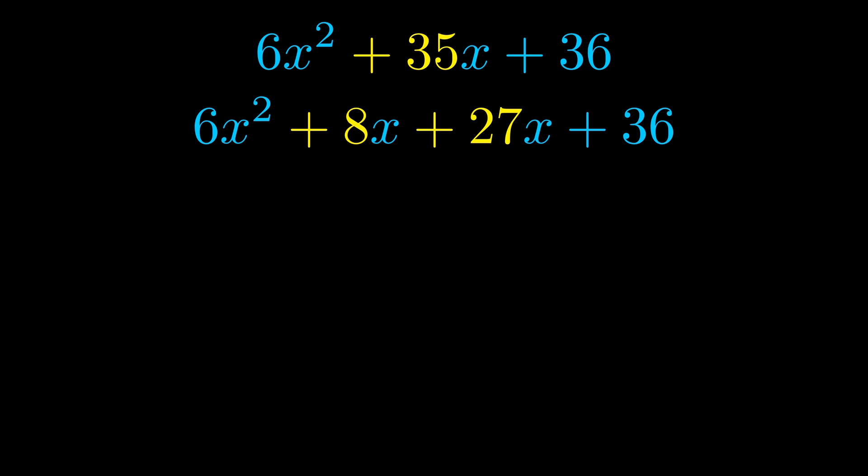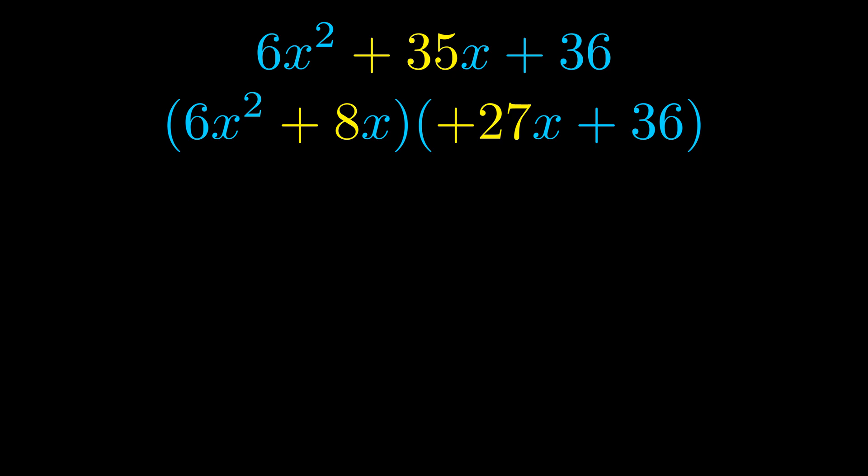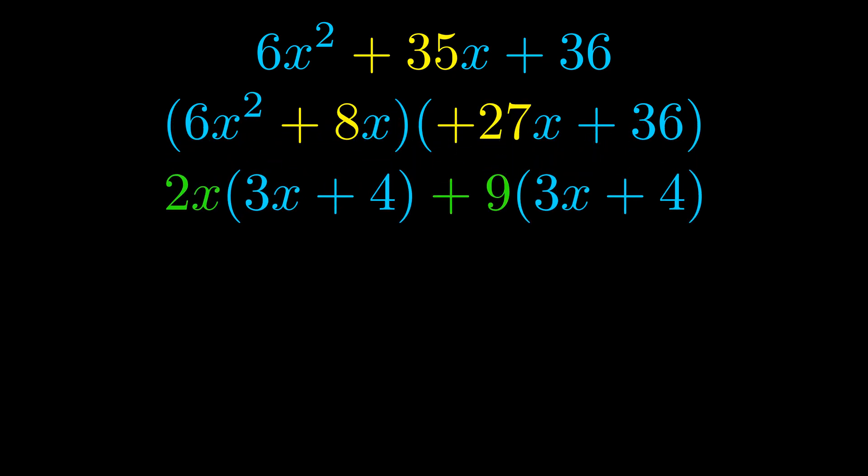Once we've done this, we go ahead and put parentheses around the first term and the last term, so that we can take the greatest common factor out of both terms. We can see the greatest common factor is now outside in green.